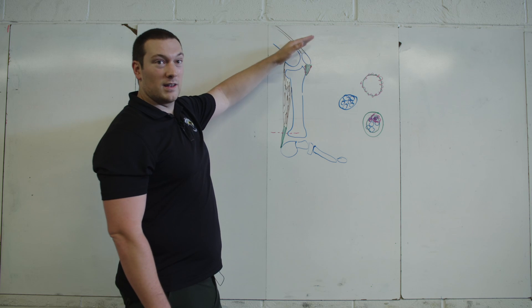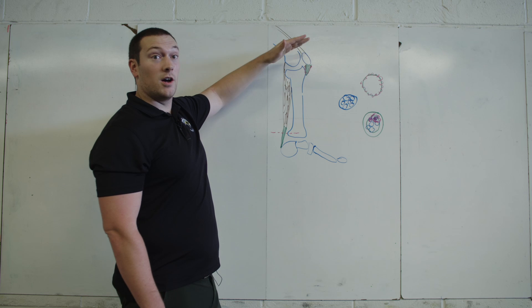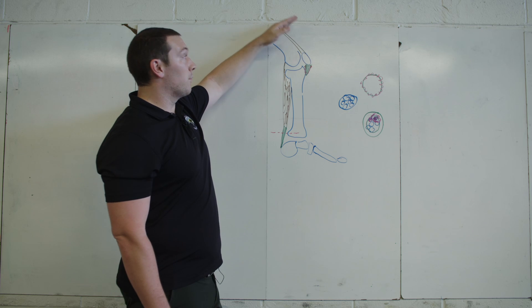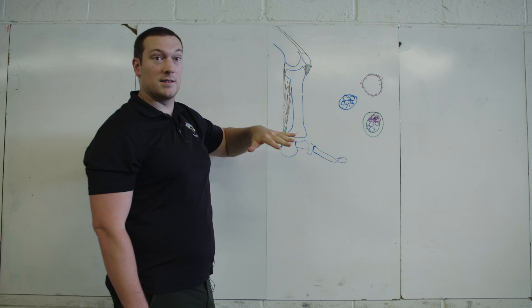But if you foam roll or get aggressive, smash out the quads, get tension off of it that way or get a massage or treatment, you can take pressure off of the quads, which will then take pressure off the tendon and allow it to relax some more.